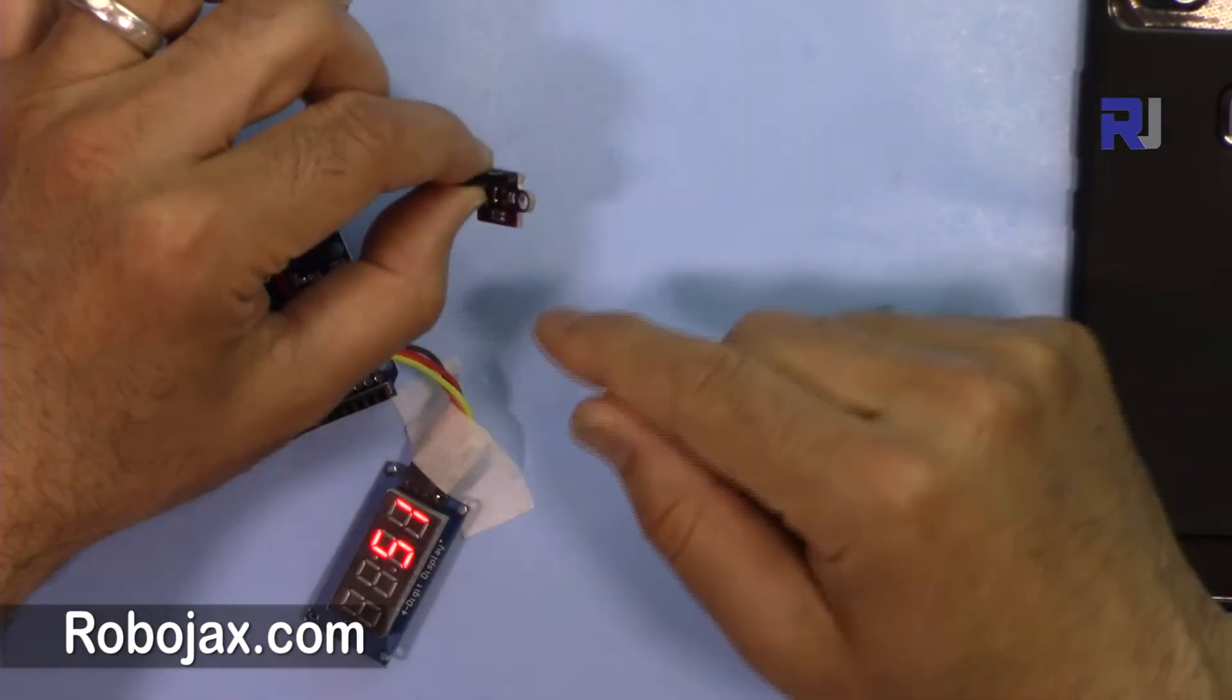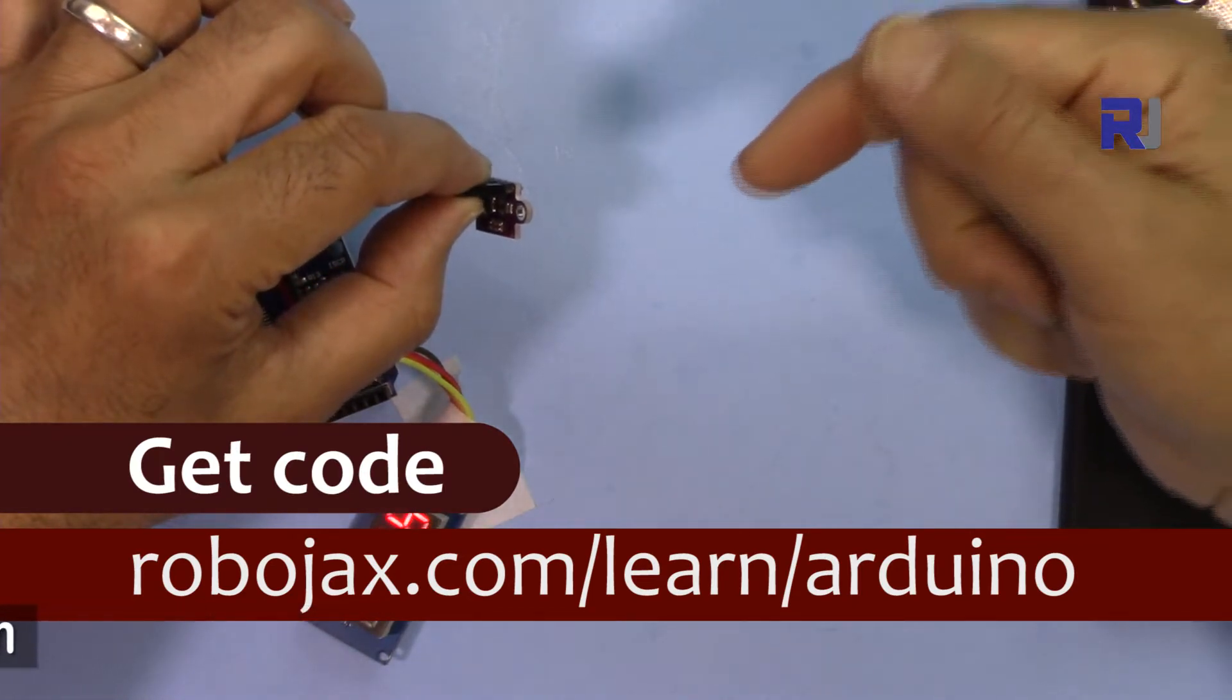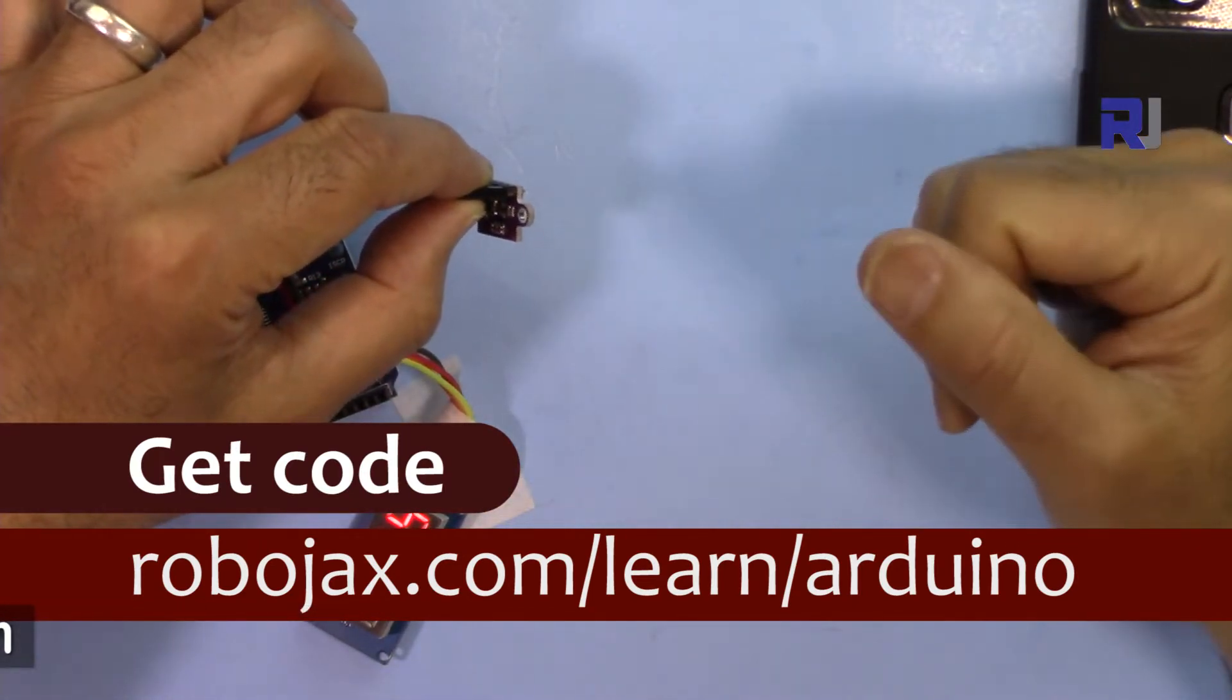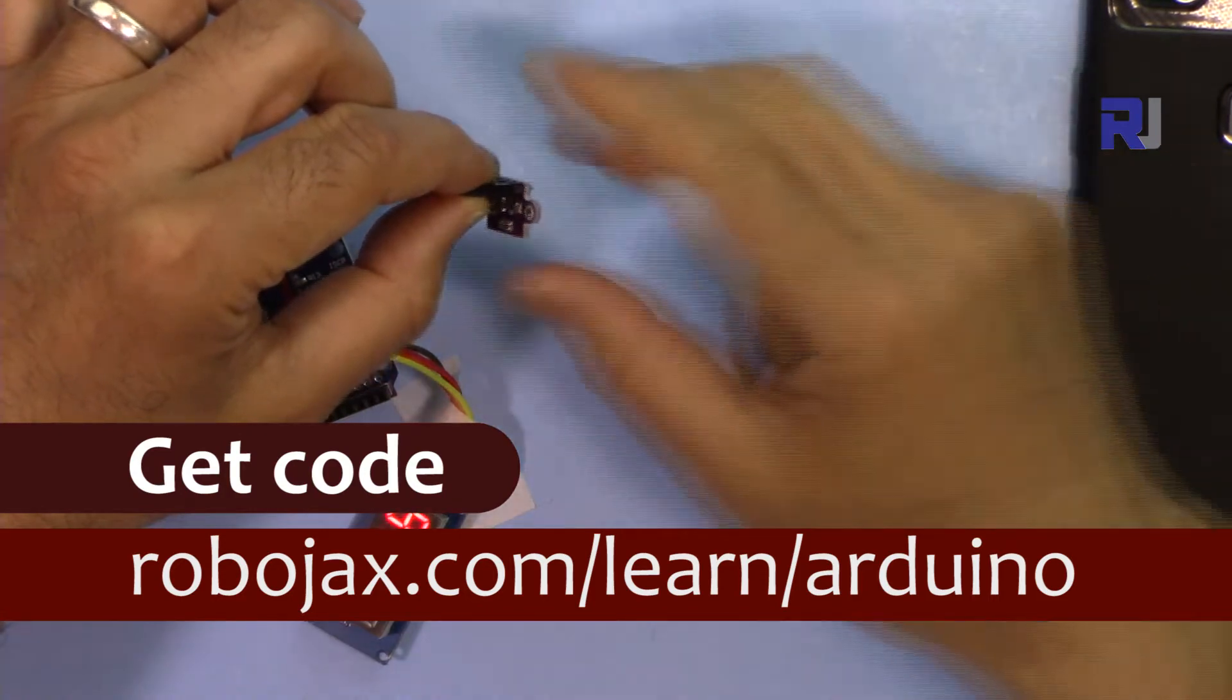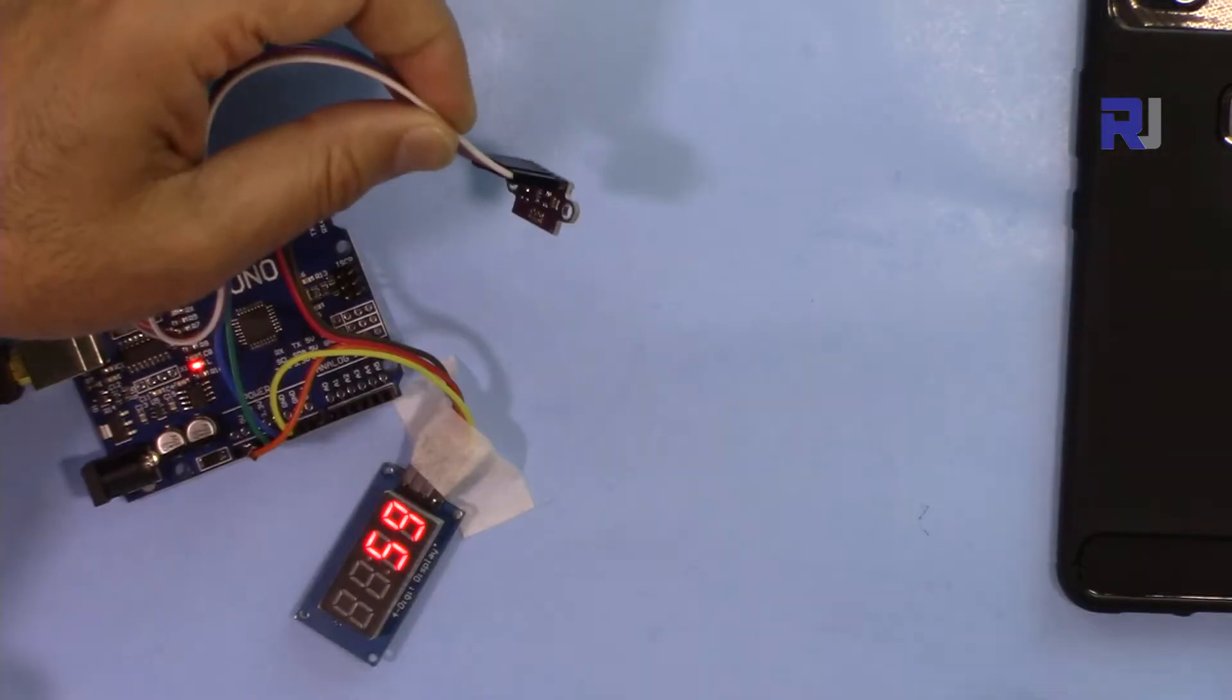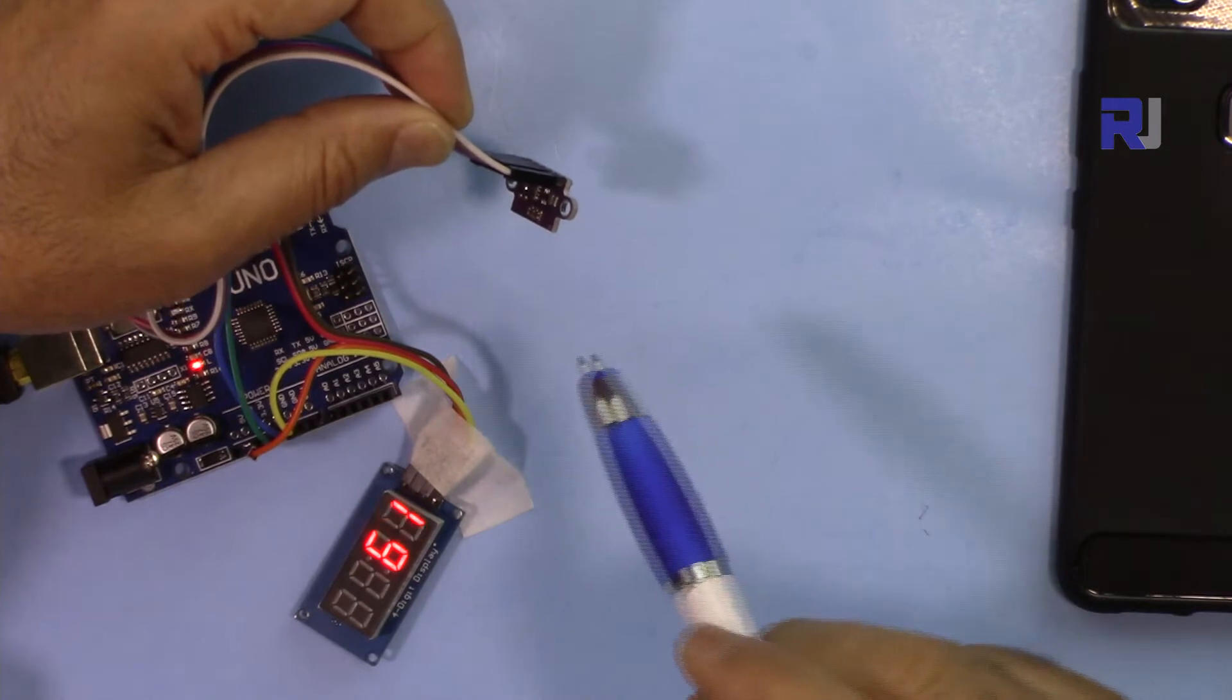You can get the code for this project by clicking on the link in the description below, which will take you to robojax.com/learn/Arduino. Let's get started with this. This project involves two items: the display and the laser module.